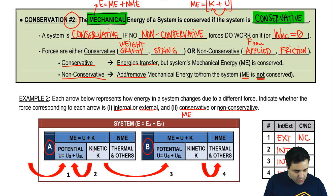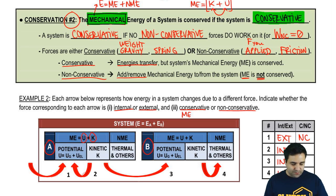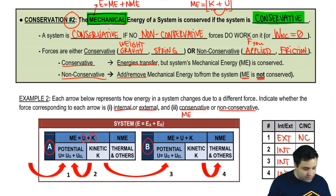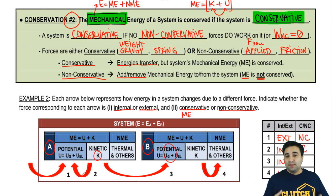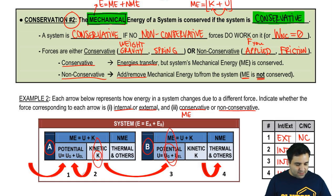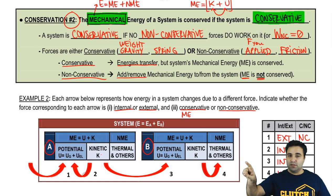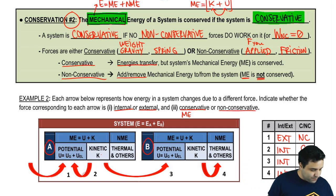Force number two: you're transferring kinetic energy into potential energy. Both kinetic and potential are mechanical energies, so the total amount of mechanical energy doesn't change because the transfer stayed within mechanical energies — this is a conservative force. For force three, we're going from kinetic energy of one object to potential energy of another object. The mechanical energy of the system is the same: one object lost some mechanical energy and the other gained some, but the total mechanical energy of the system is the same, even though the transfer is happening between objects. Conservative.